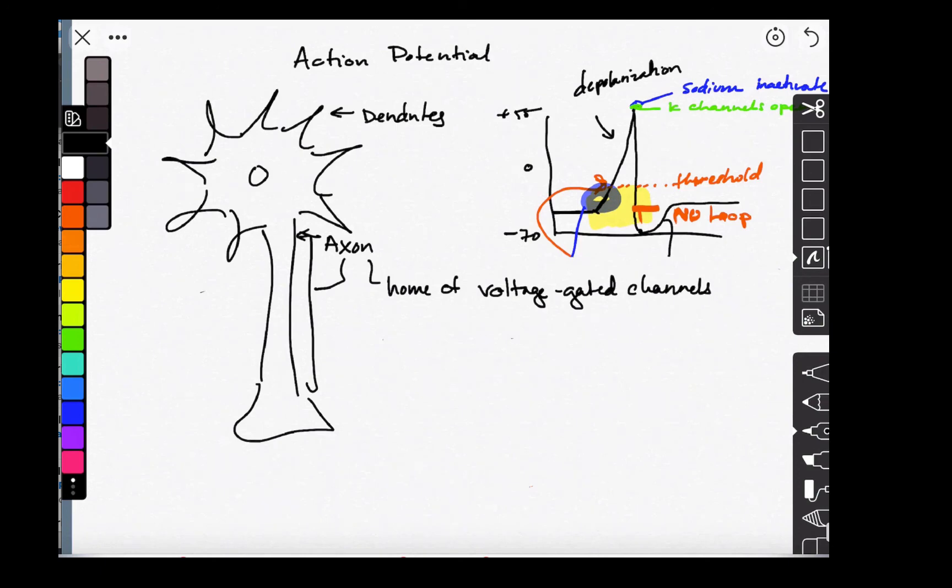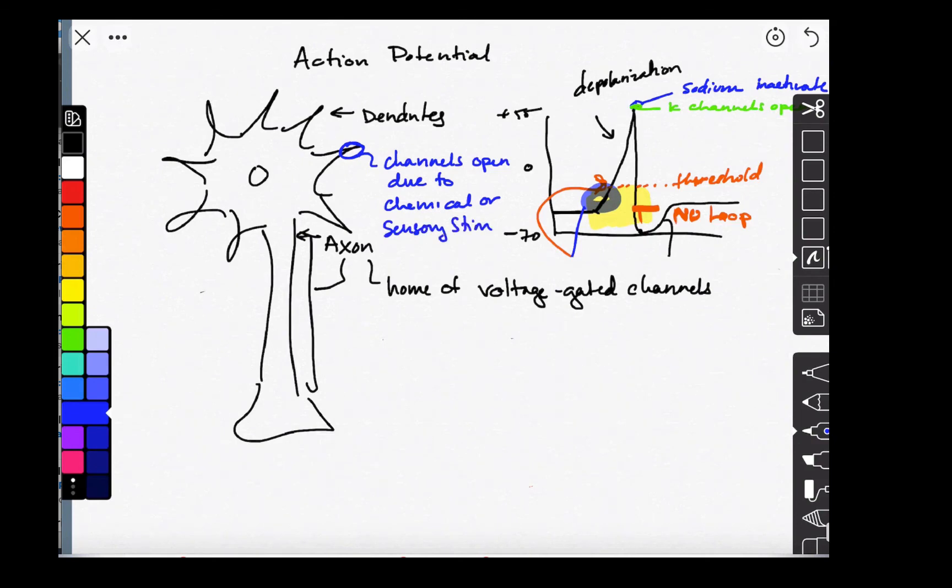On the dendrites, the channels that are here open due to chemicals like a neurotransmitter or a sensory stimulus. When they do that, they allow positive ions in.